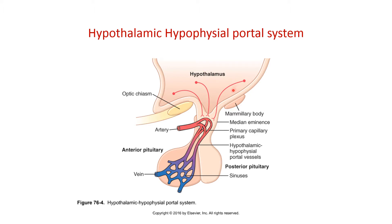These neurosecretory neurons secrete hormones into the primary capillary plexus located in the median eminence region. The hormones are carried via the hypothalamic hypophysial portal vessel and terminate in a secondary capillary sinus within the anterior pituitary gland. They affect the activity of the pituitary gland to secrete its own hormones, which are then carried by the hypophysial vein to their target destination.